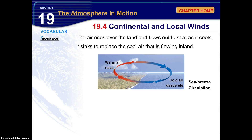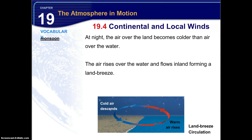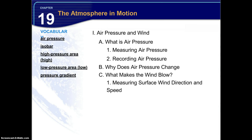The air rises over land and flows out to the sea; as it cools, it sinks to replace the cool air flowing inland. Sometimes this involves a valley, mountain, or other topography, but the circulation is typically the same. At night, the air over the land becomes colder than the air over the water. The air rises over the water and flows inland, forming a land breeze.